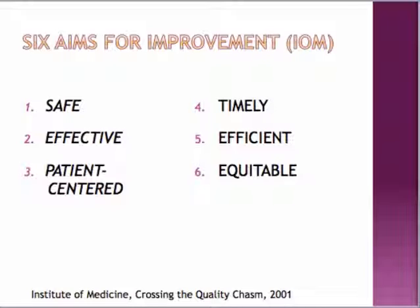The third aim was that our care should be patient-centered — providing care that is respectful and responsive to individual patient preferences, needs, and values, and assuring that patient values guide all clinical decisions. The fourth aim is to be timely — reducing waits and sometimes harmful delays for both those who receive care and those who give care. The fifth aim is to be efficient — avoiding waste, including wasting equipment, supplies, ideas, and energy.